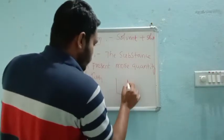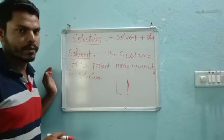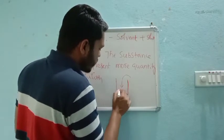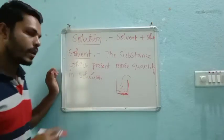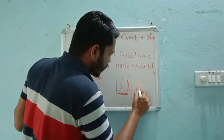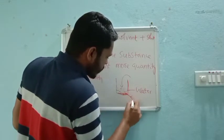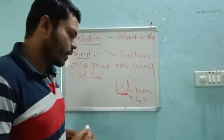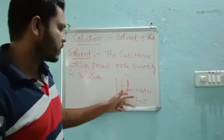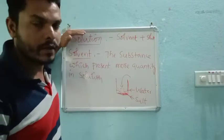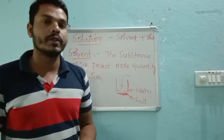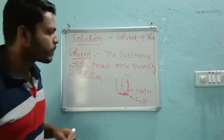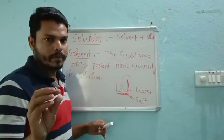Let us take one example. I am adding some amount of sugar and pouring some amount of water. So here there are two quantities — water as well as sugar or salt. There are two things in this vessel, so that is why it is a solution. Now our duty is to identify which one is solvent and which one is solute.